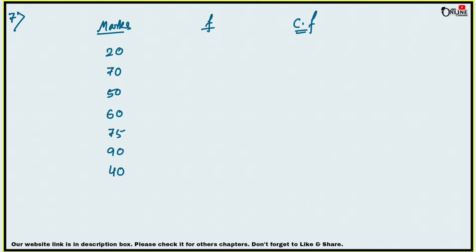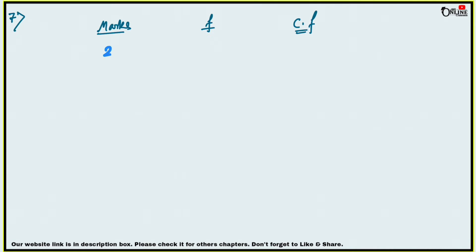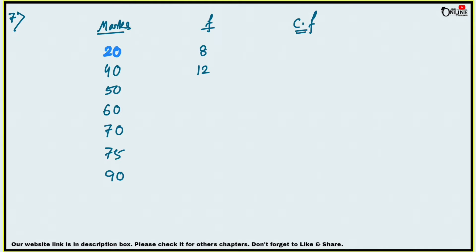First you have to arrange the marks into ascending order. So the ascending order is: 20, 40, 50, 60, 70, 75, 90. The corresponding frequencies are: for 20 it is 8, for 40 it is 12, for 50 it is 18, then 6, 12, 9, 5.